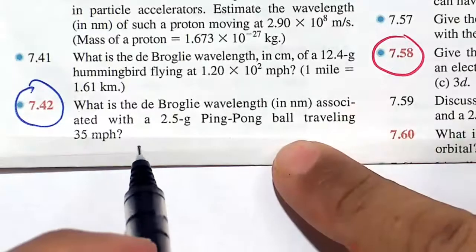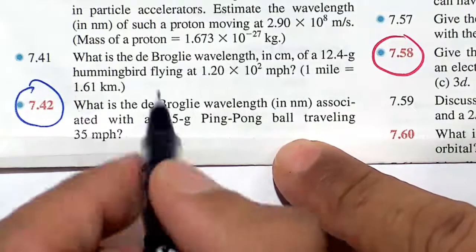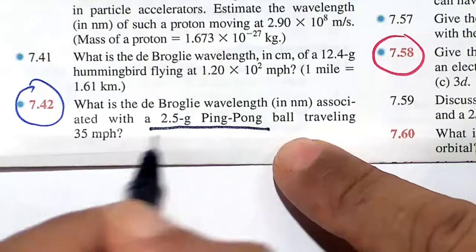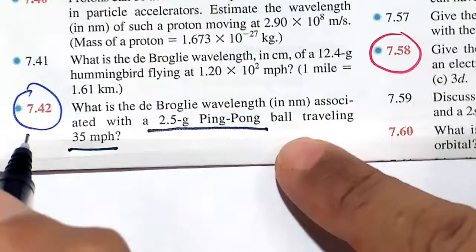In this video we will calculate the de Broglie wavelength. Here you have a 2.5 gram ping-pong ball traveling at 35 miles per hour.